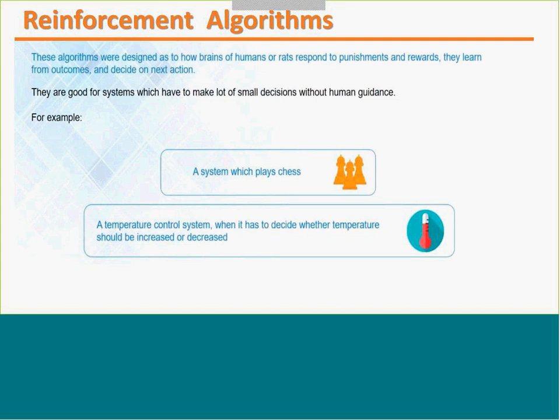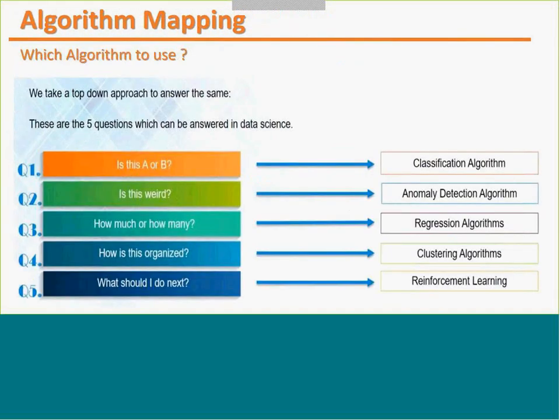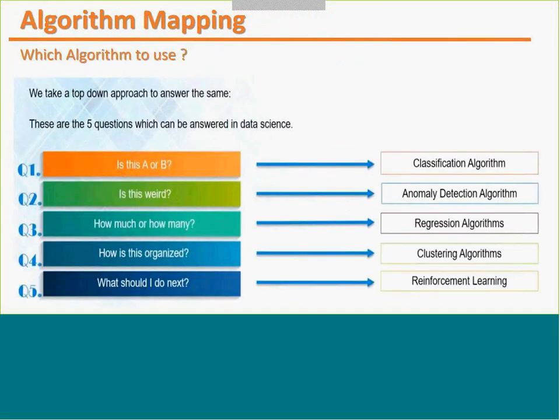So to summarize, the basic five types of algorithms in machine learning are: classification, anomaly detection, regression, clustering, and reinforcement learning. We will see each one of these algorithms in the next couple of slides.